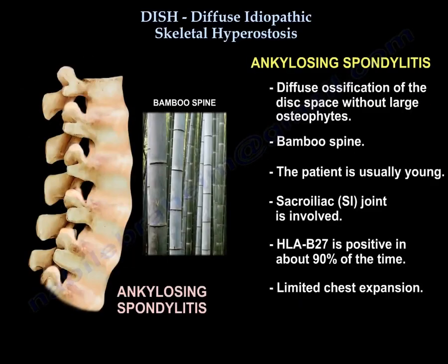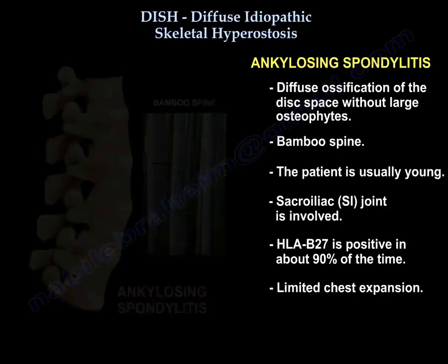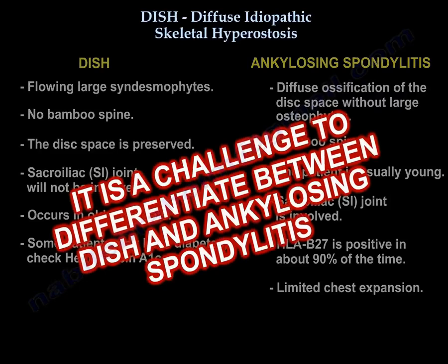In ankylosing spondylitis, there is diffuse ossification of the disc space without large osteophytes, and there is bamboo spine. The patient is usually young. There is involvement of the SI joint, and HLA-B27 is positive in about 90% of cases. There is also limited chest expansion. It can be a challenge to differentiate between DISH and ankylosing spondylitis.